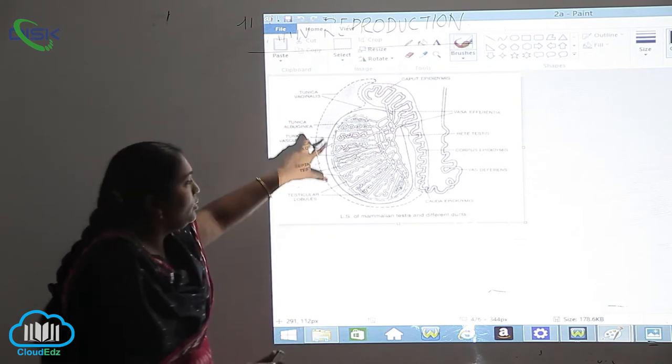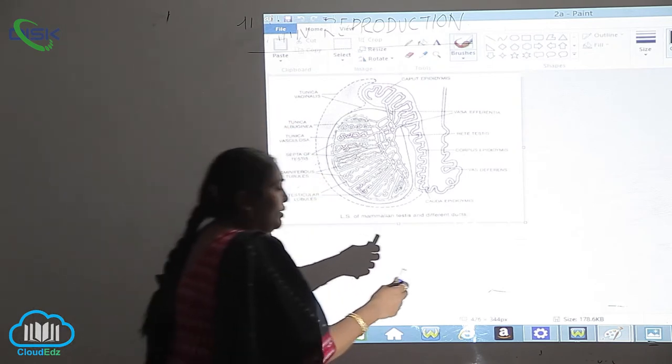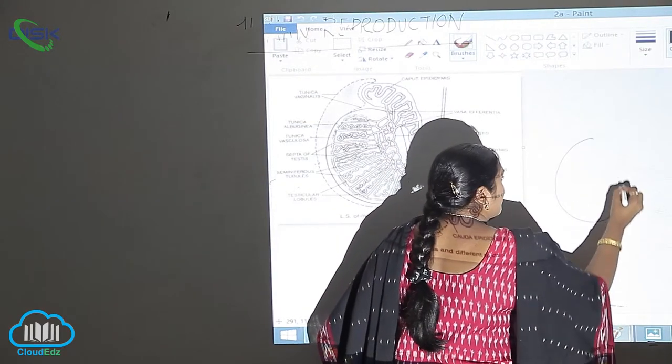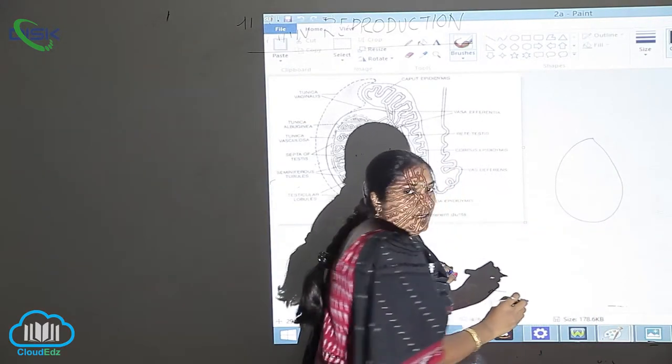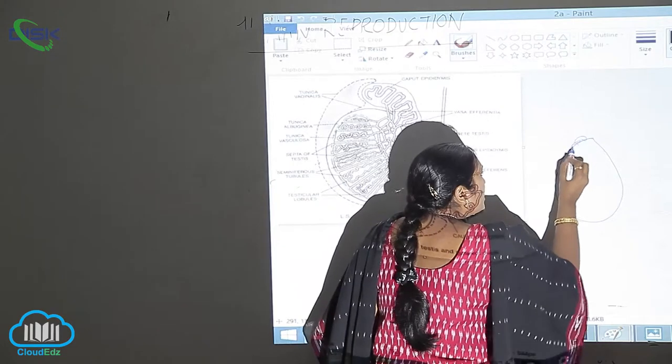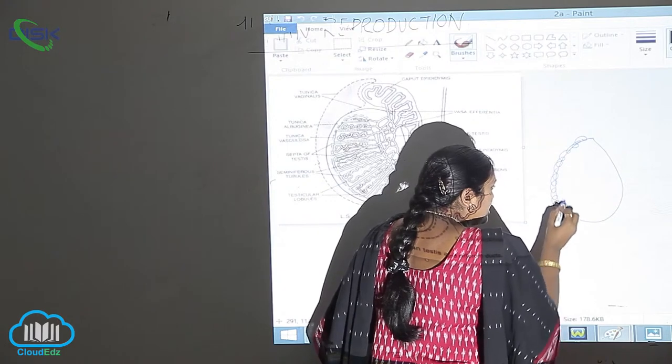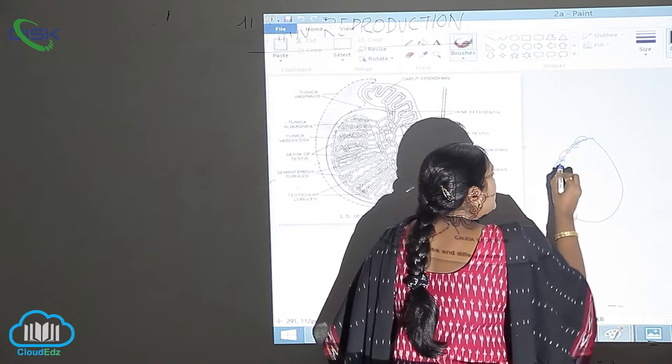When you talk about the testes, we always talk about the epididymis. If you see the testes, you can see a cushion-like structure, as I told you previously, which is called the epididymis.